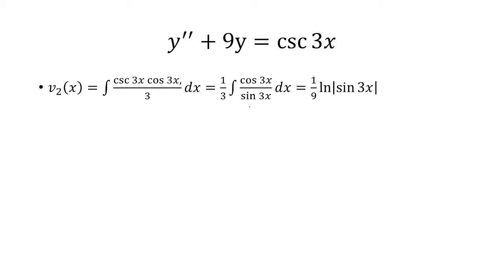And here you can use u substitution. So if you let u equal sine 3x, du is 3 cosine 3x. So then du over 3 is cosine 3x dx.